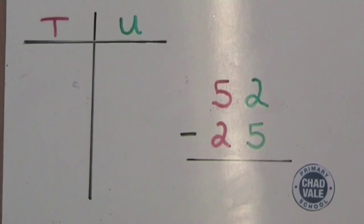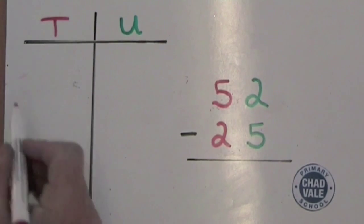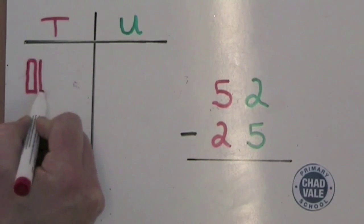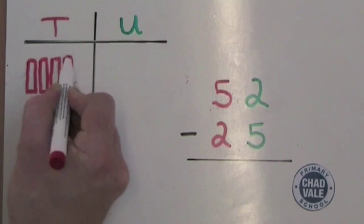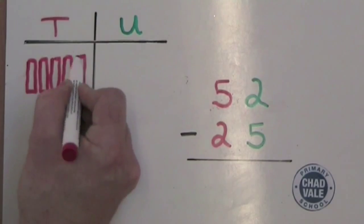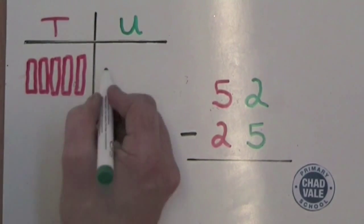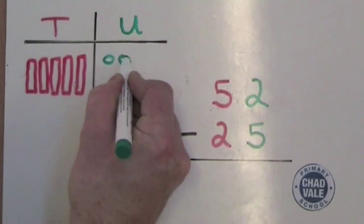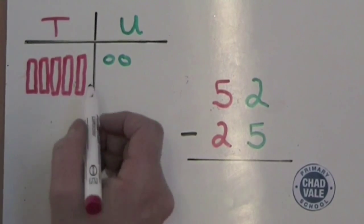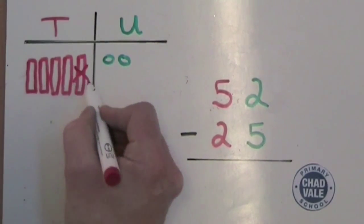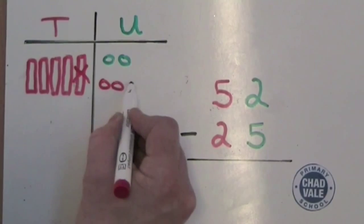Our next problem is 52 subtract 25. Firstly we need to draw 52, which has five tens and two units. We then think: two units subtract five units, which we can't do, so we cross out a tower of 10 and break it back up into 10 units.